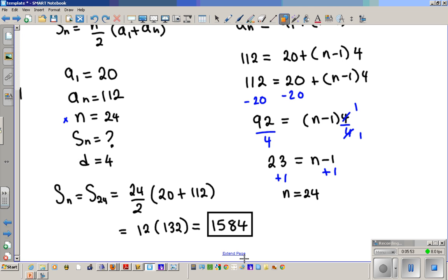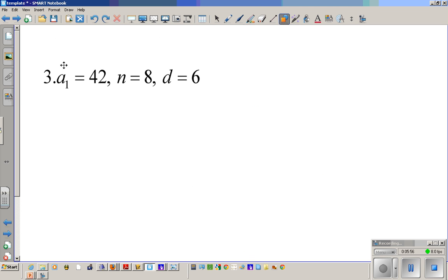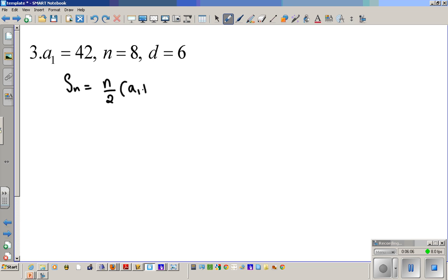Alright, let's show another example. Now using this information right here, we're going to do the same process. We want to find SN. The SN formula again is N over 2 times A1 plus AN. Let's list what we know. We have A1 is 42, that's good. We have N is 8, that's good.